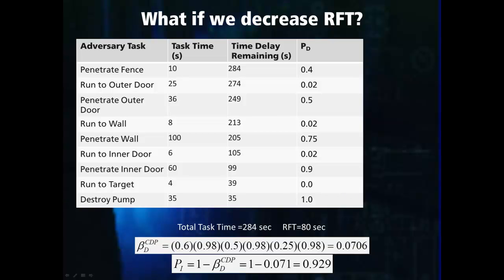In this table, we again have the original pathway, but have improved the response force time from 200 seconds to 80 seconds. Similarly to increasing the delay at the pump, this shifts the critical detection point to before the inner door is breached. Because we include all detectors up until the critical detection point, this upgrade yields the same result as the previous example, giving a non-detection probability of 0.0706 and a probability of interruption of 0.929.